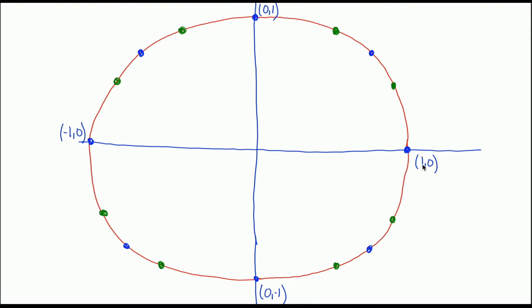When I say memorized, I mean you want to know the x and y coordinates of each of these 16 points. You also want to know the angle measure in degrees between 0 and 360 degrees that would terminate at that point, and the angle measure between 0 and 2π that would terminate at that point. That's four things: x value, y value, angle in degrees, and angle in radians for each of these 16 points. The short answer is yes you need to memorize them, but there's a lot of symmetry and you know more about this already than you think.